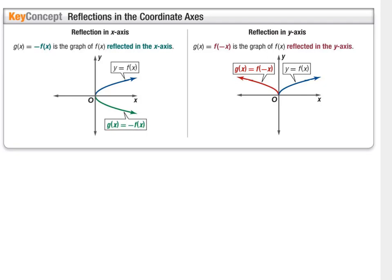Next are reflections across the x-axis and y-axis. If you see a negative in front of the function — they've multiplied negative 1 times the entire parent function — that's a reflection across the x-axis. If you see a negative multiplied times the x, just the x in parentheses possibly, that would be a reflection across the y-axis.